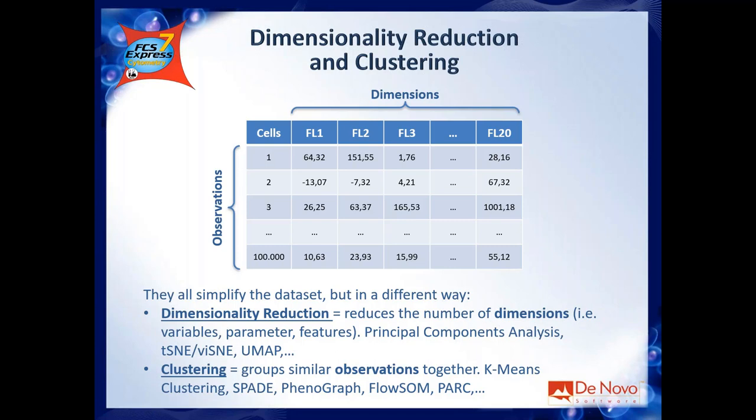You have two possibilities to simplify this kind of table. You can reduce the number of columns using dimensionality reduction tools such as principal component analysis, tSNE, or UMAP. Or you can reduce the number of rows using clustering — grouping similar objects together so that instead of many individual cells you end up with fewer groups of cells.